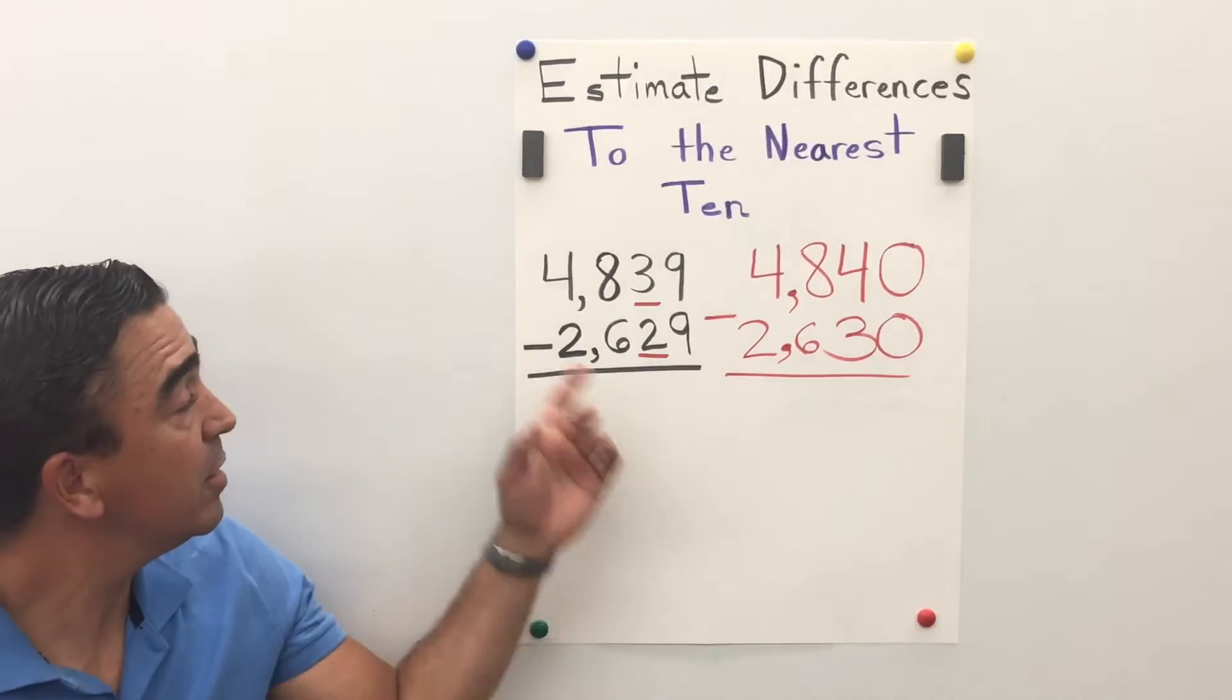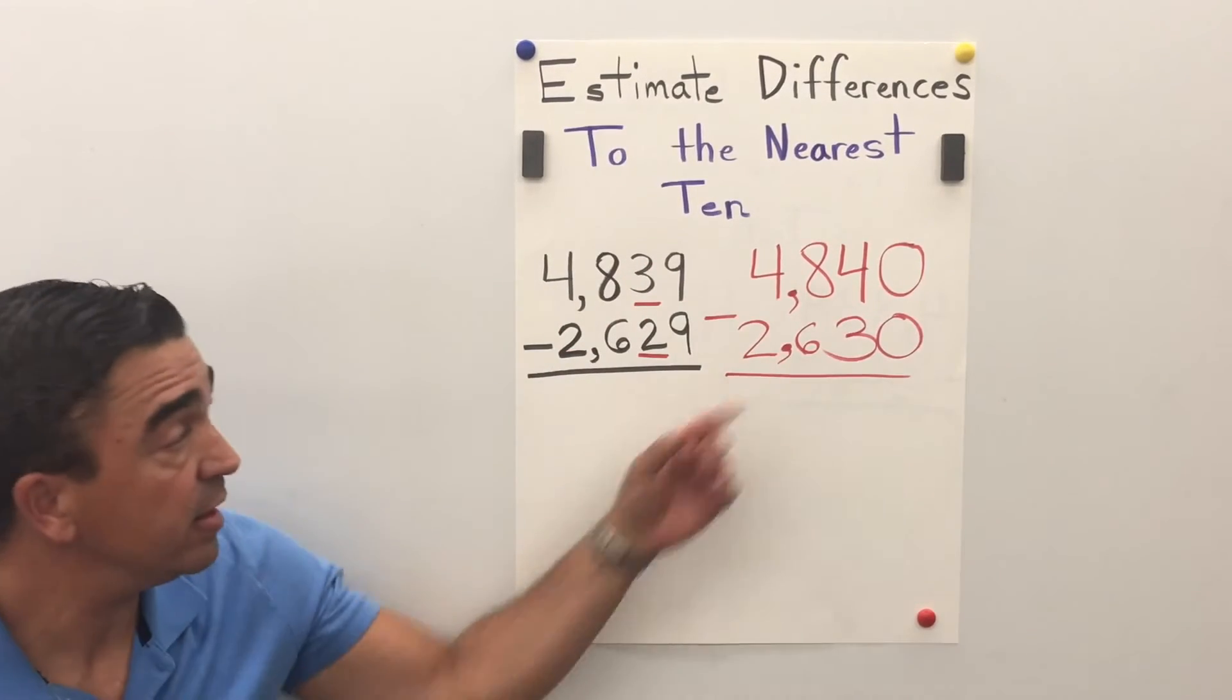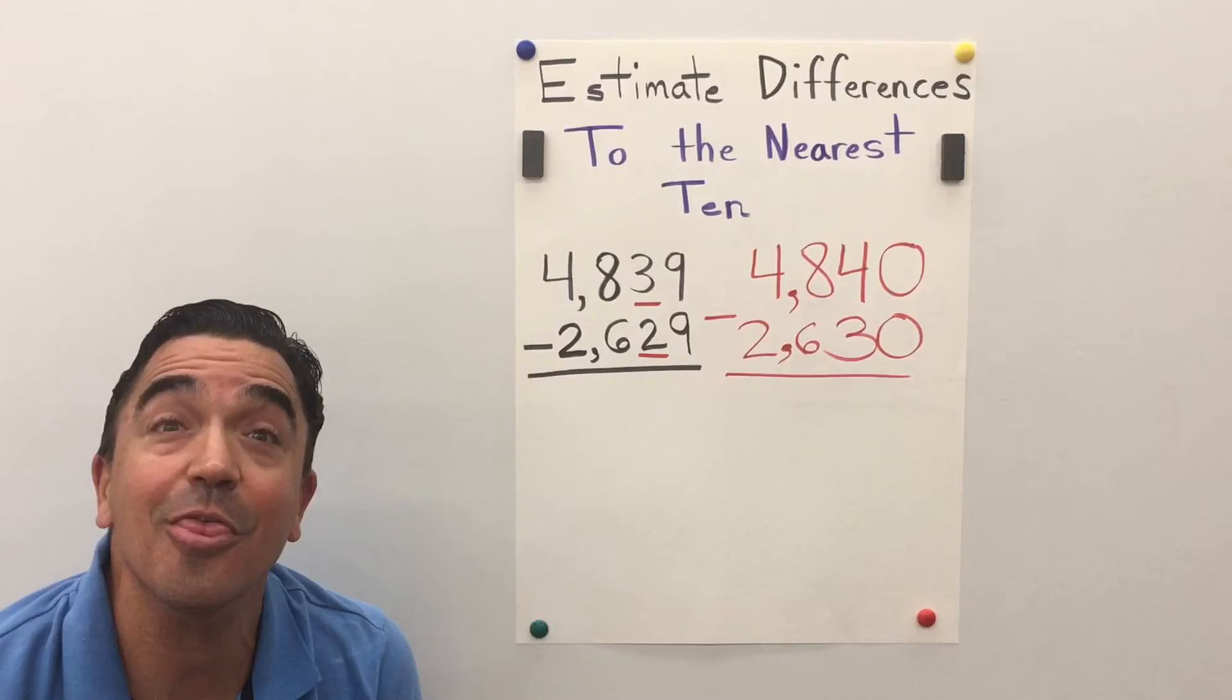So, 2,629, rounded to the nearest ten, is 2,630.